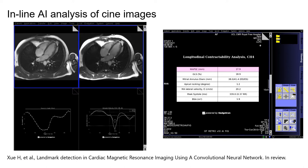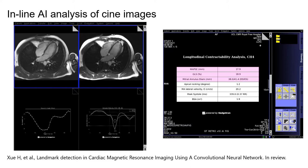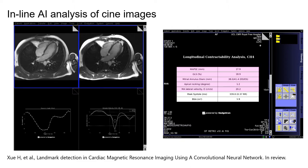The report currently includes the MAPSI, the global longitudinal shortening, as well as systolic and mitral annulus diameter, apical rocking — which is a marker associated with asynchrony frequently found in left bundle branch block — and mitral annular velocity.